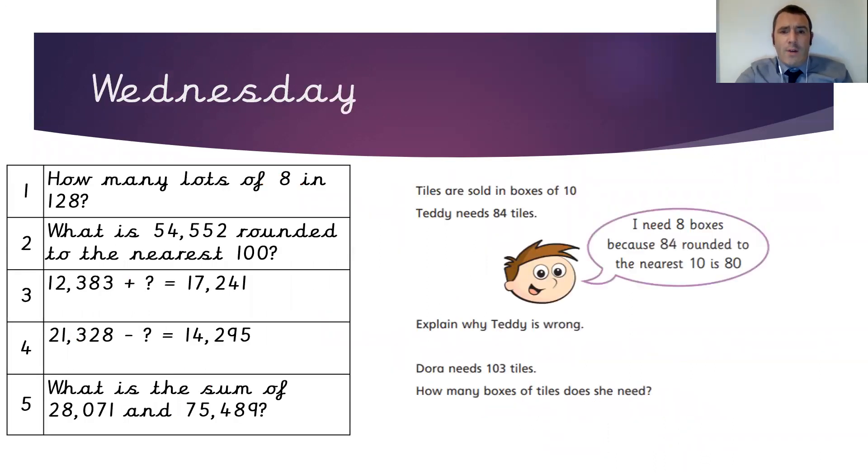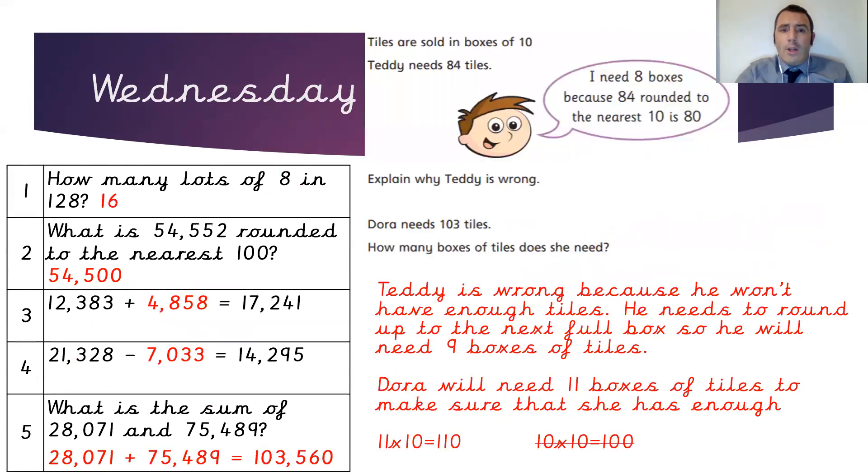Welcome to Wednesday's questions, Year 5. Pause the video here to do your work. Press play when you're ready to carry on. Teddy is wrong because he won't have enough tiles. If he's ordered eight boxes of tiles with 10 tiles in each, he will only have 80 tiles. He will be four tiles short of the number he actually needs. In this instance, he would need to round up. He'd actually need to order 90 tiles, which would mean nine boxes.